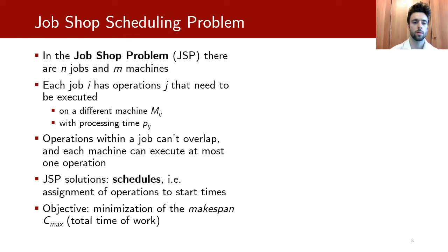The job shop scheduling problem, JSP for short, is one of the most well-known problems in the scheduling family. The JSP has n jobs and m machines. Each job has to be executed on each of the m machines and each execution defines an operation. Each operation needs to be executed on a different machine M_ij, where i is the job and j is the index of the operation, with processing time p_ij. Two operations from the same job can't overlap, and each machine can execute at most one operation.